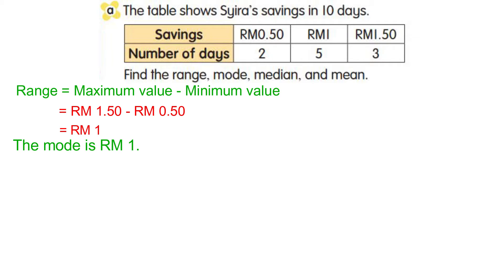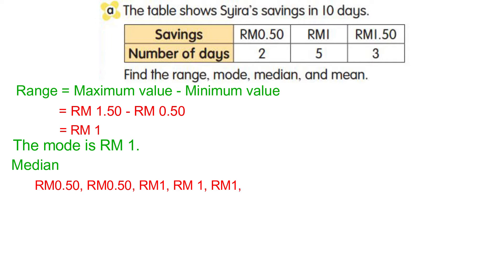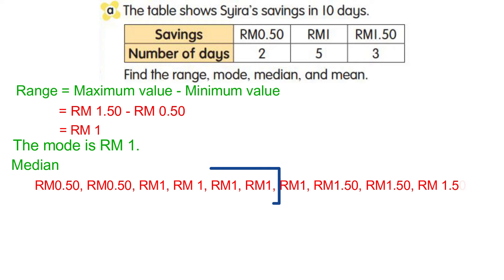Now find the median. To find the median, arrange Shira's savings in 10 days according to ascending order. Write 50 cents 2 times, 1 ringgit 5 times because she saved 1 ringgit for 5 days, and 1 ringgit 50 cents 3 times. Then find the value located in the middle. There are 2 values in the middle — that is 1 ringgit and 1 ringgit.